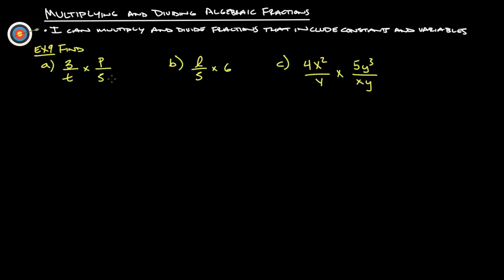Find 3 over t times p over 5. So to do this we're simply going to multiply straight across. 3p and then we have t times 5 is t5, but we write the number before the variable so we would write that as 5t. So there is multiplying this fraction here.